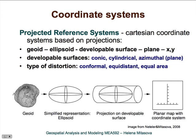In projected systems, data are projected from geoid to ellipsoid — the same as for the geographic coordinate system — but then also from the ellipsoid to a developable surface, which can be a cone, cylinder, or a plane. That developable surface is then unrolled, and you end up with a planar map with an XYZ coordinate system that is relatively easy to work with. However, transforming data from the ellipsoid to the plane introduces distortions.